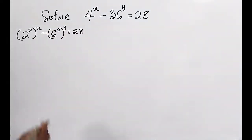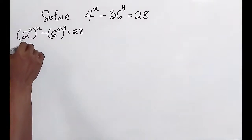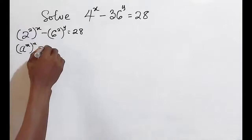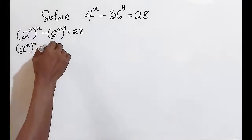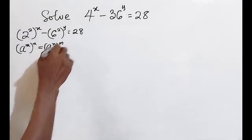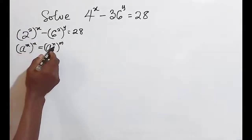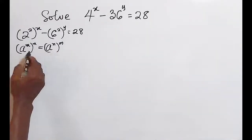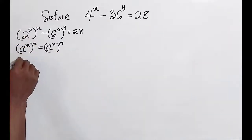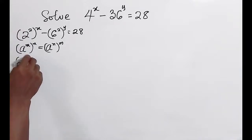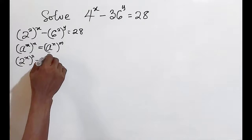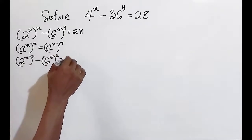We know, according to the law of indices, that a raised to the power of m raised to the power of n is the same as a raised to the power of m×n, which implies that the powers here can be interchanged. So we can write: 2 raised to the power of x, raised to the power of 2, minus 6 raised to the power of y, raised to the power of 2, equals 28.